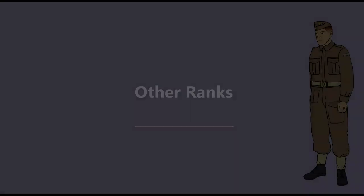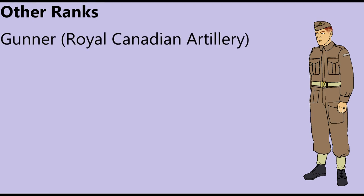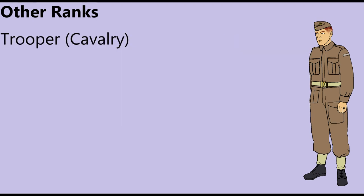The lowest category of soldiers was referred to as Other Ranks, a subtle reflection of Britain's caste system. The lowest rank was Private, though other specific titles were used depending on the soldier's unit. In the artillery, he was called Gunner, and in Cavalry, Trooper.